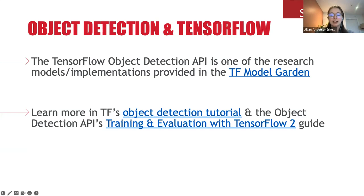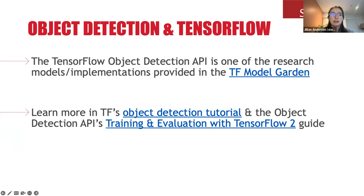Generally speaking, the object detection API is a framework for both creating and training models from scratch, as well as a collection of pre-trained models that we can fine-tune. That's probably most typical, particularly if you're looking to apply deep learning to a new domain such as wildlife monitoring — you'll likely take a pre-trained model and fine-tune it on a specific dataset, which is what we did for this project.